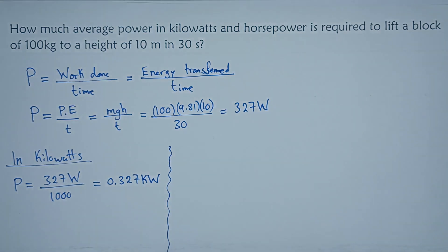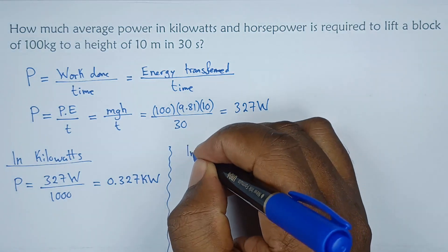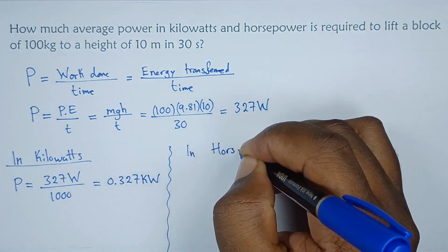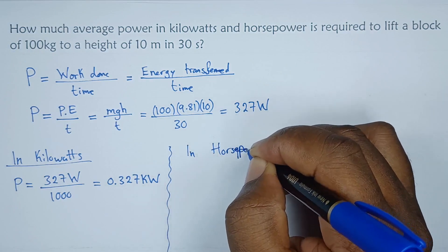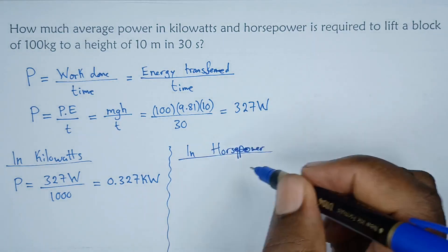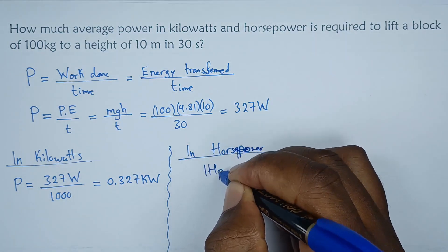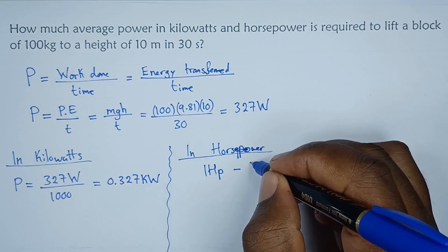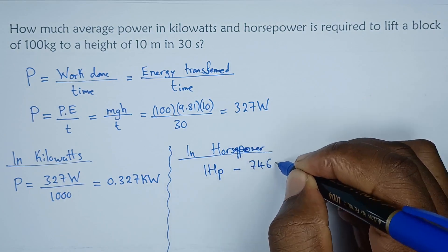Now let's find it in horsepower. In horsepower, the idea is one horsepower, one HP, is equivalent to 746 watts.